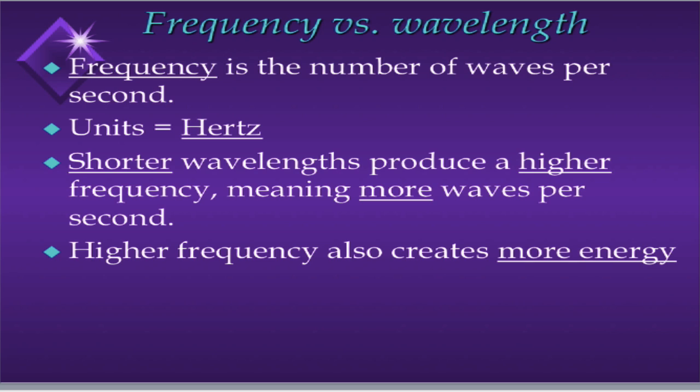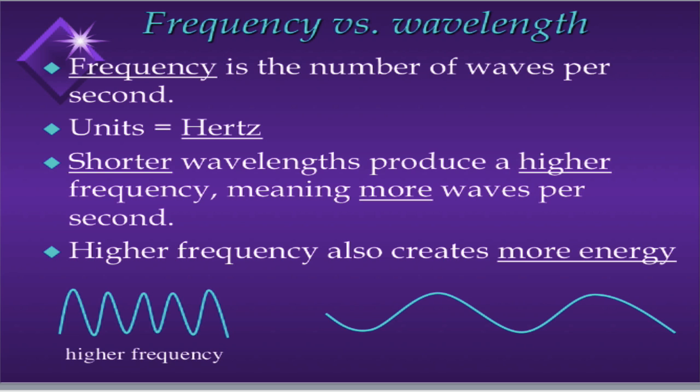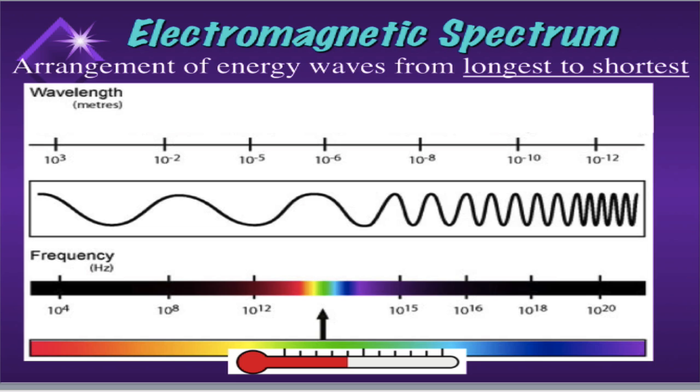Now that we have all the background we need, let's get back to the electromagnetic spectrum. One type has a longer wavelength, and another type has a shorter wavelength. The shorter wavelength — or higher frequency — should be the one on the left of the electromagnetic spectrum.